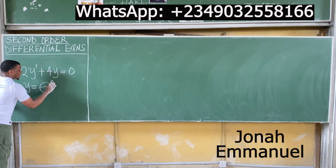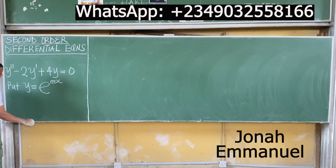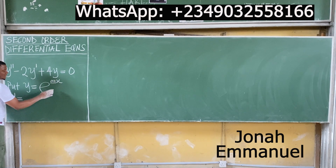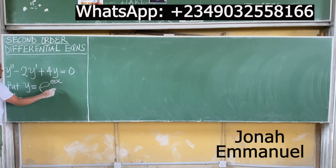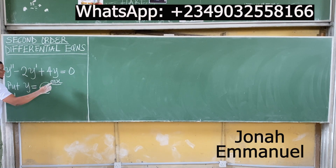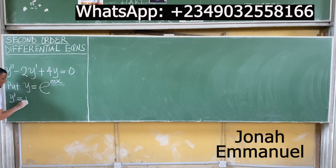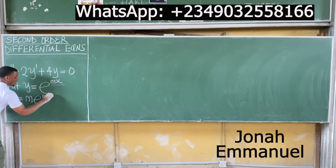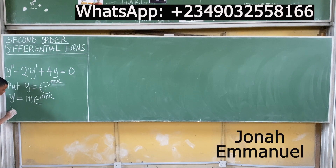Let y = e^(mx). To find y', we differentiate e^(mx). The key concept is to focus on the power mx — differentiating mx with respect to x gives m, so y' equals m·e^(mx).